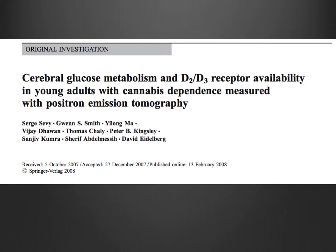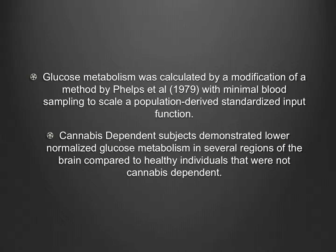This was another paper used in my investigation. Much like the prior one, it studied cerebral glucose metabolism in young adults with cannabis dependence and also looked at dopamine receptor availability. Glucose metabolism was calculated by a modification of a method by Phelps and other authors. What they found was that cannabis-dependent subjects demonstrated lower normalized glucose metabolism in several regions of the brain compared to healthy individuals who were not cannabis dependent — the same finding as the prior investigation, that THC and CBD do affect the metabolic rate at which glucose is processed in the brain.